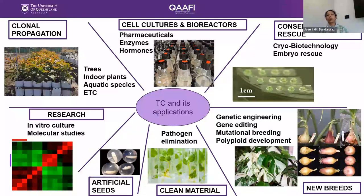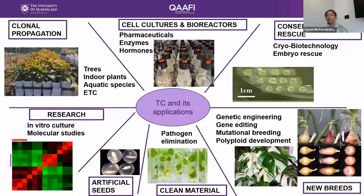We use tissue culture for embryo rescue to help breeding programs with many recalcitrant species. Tissue culture is also very important for genetic engineering, gene editing, mutational breeding, and polyploid development in producing new varieties of plants. A very good example is our humble onion — polyploid development is widely used in bulb species. Another example of mutational breeding is house plants — you see a lot of variegated, colorful plants because people apply tissue culture with mutational breeding under gamma radiation conditions.